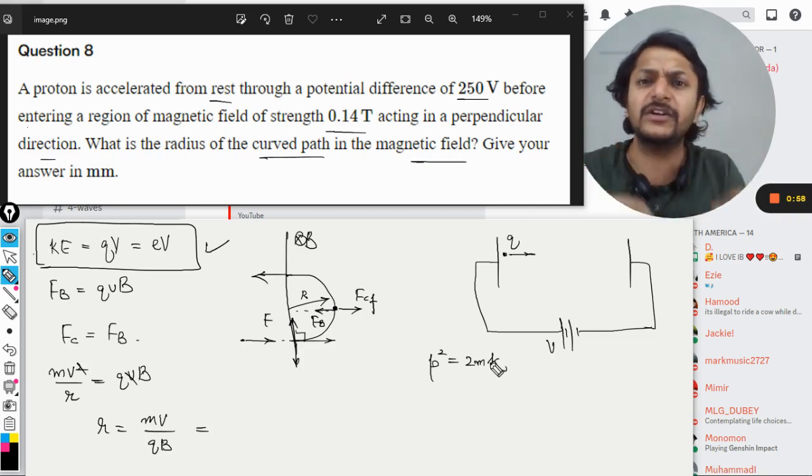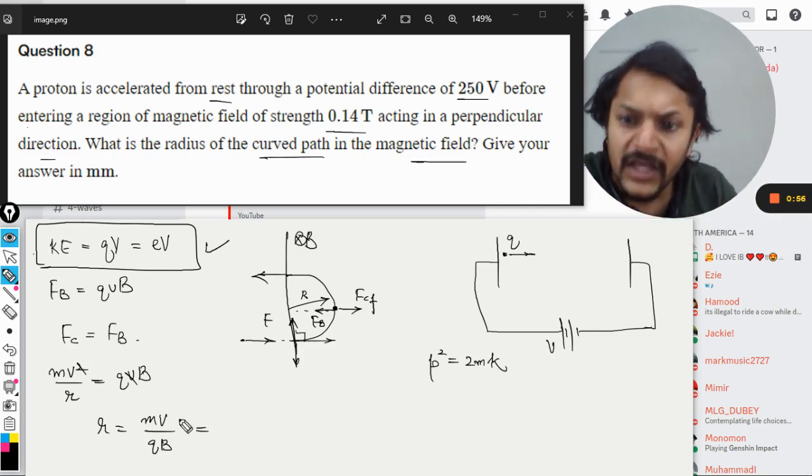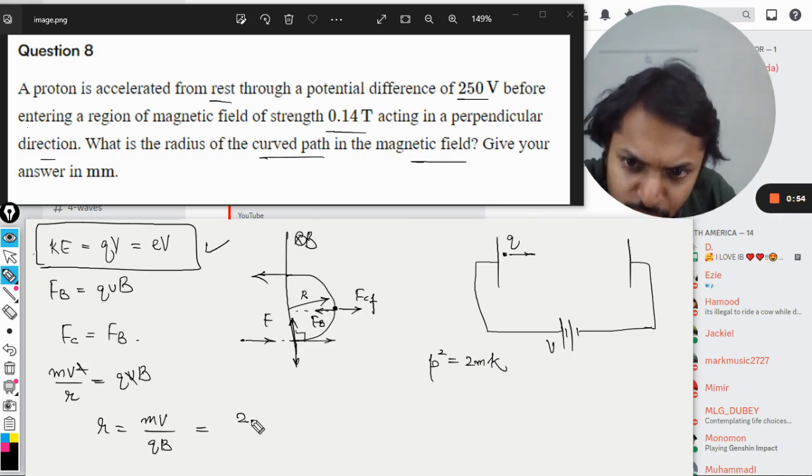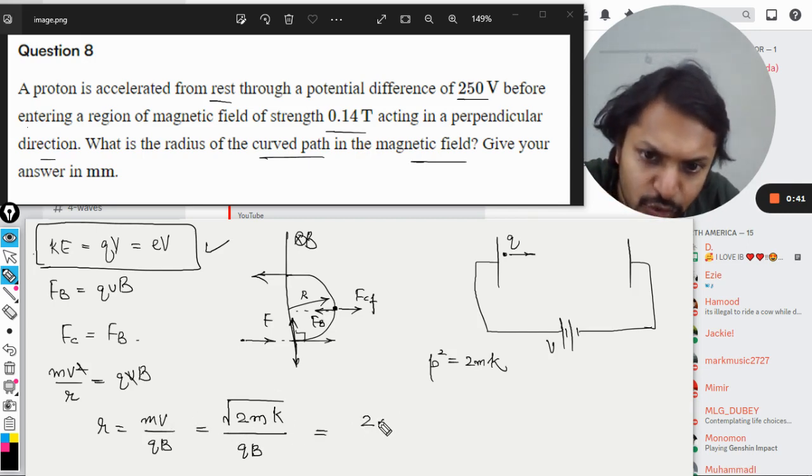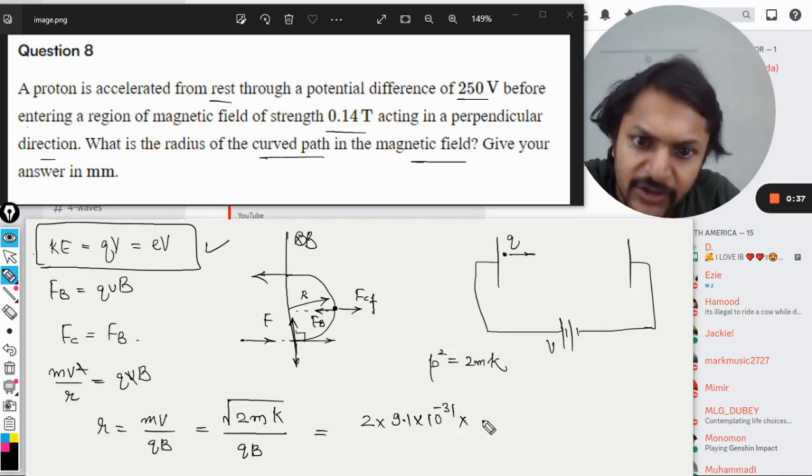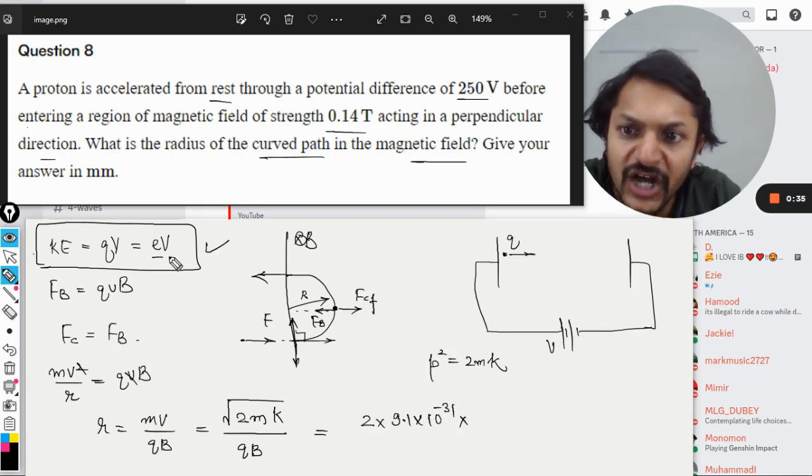Momentum will be given by the square root of 2m times kinetic energy, divided by QB. There's no respite, we have to substitute the mass, but we can get rid of velocity this way. So it's the square root of 2 times mass of proton times kinetic energy, which is charge of proton multiplied by the voltage.